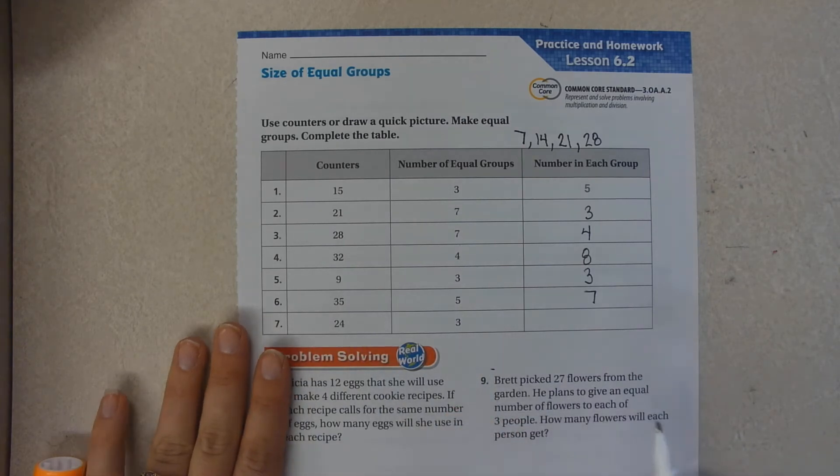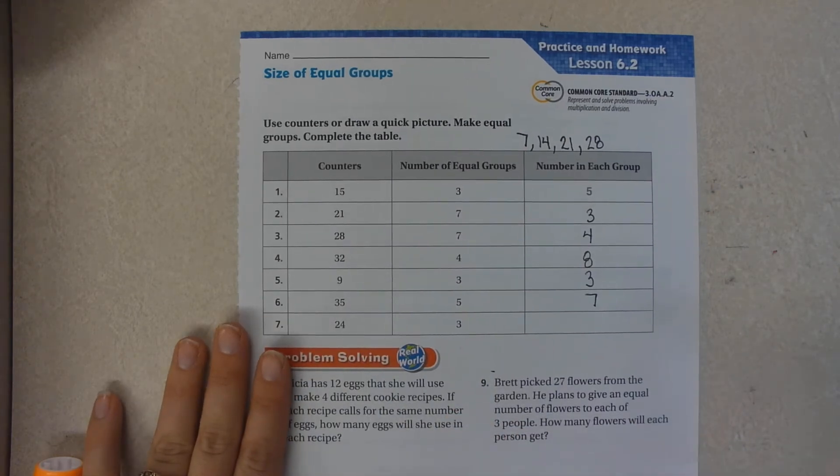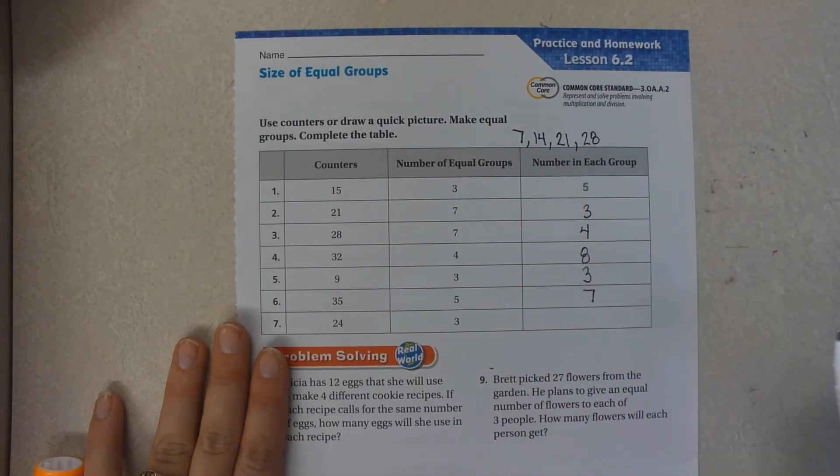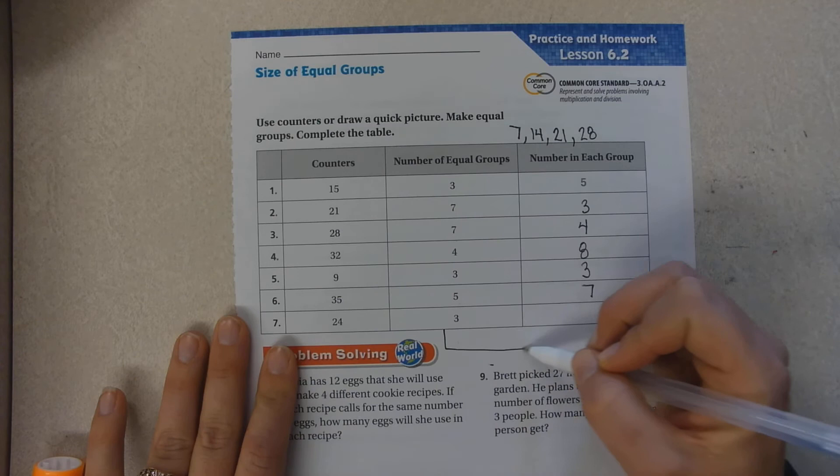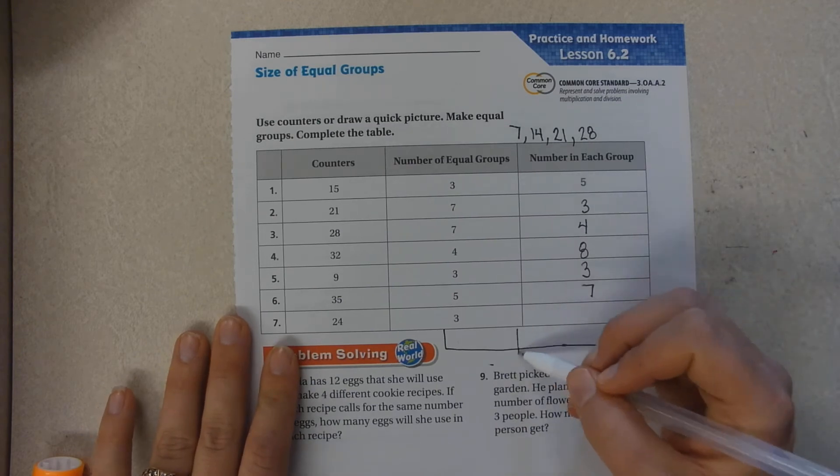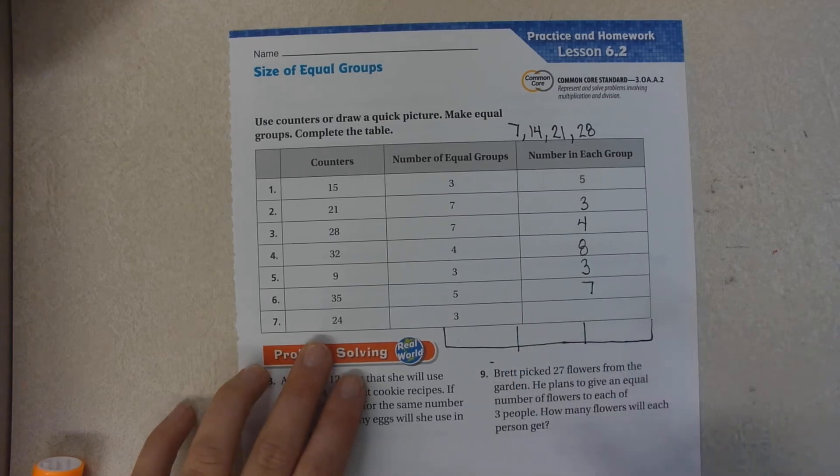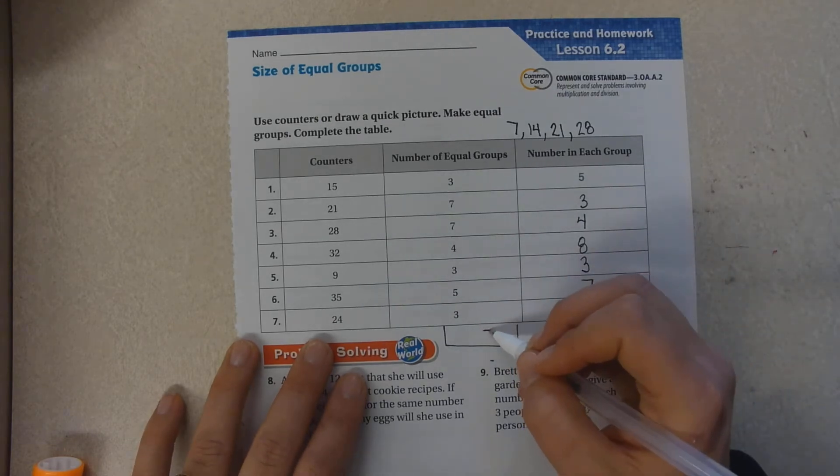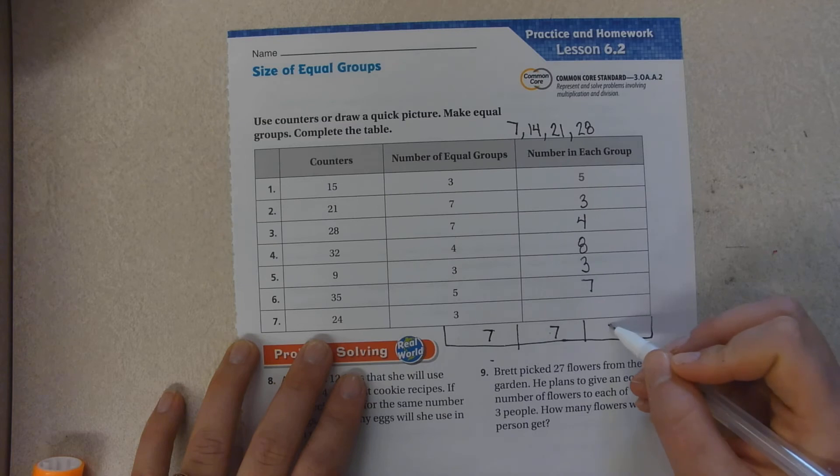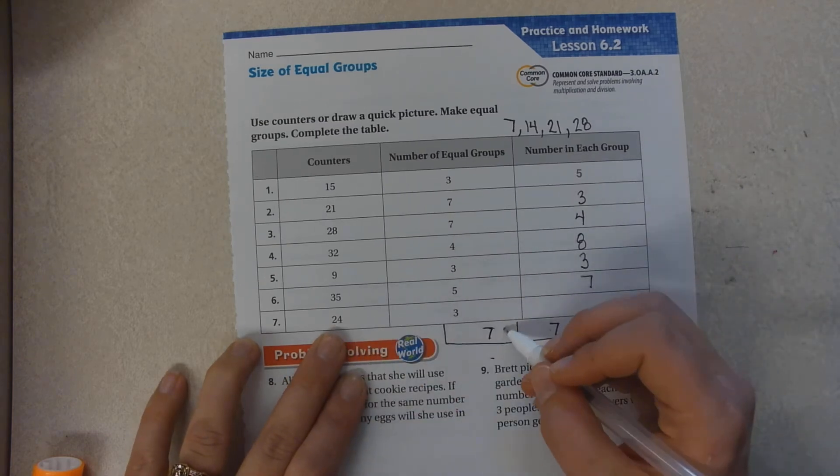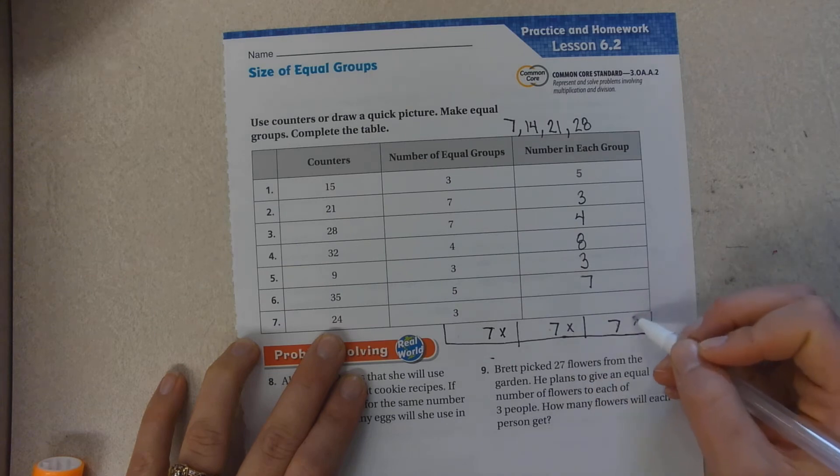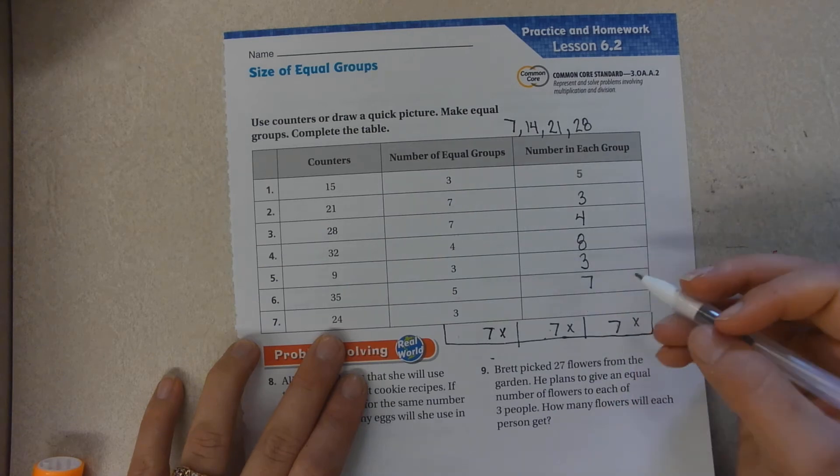How many times does 3 go into 24? So say you can't count it, say you don't have anything with you. The easiest way to do this is to draw a model and cut it into thirds. And then you're going to start skip counting by the highest number you can. 7, 14, 21. I need to get to 24. 22, 23, 24. So how much is in each box? 7 plus one more is 8.